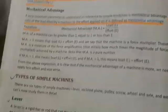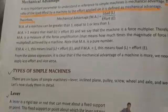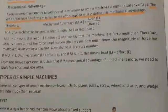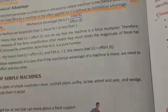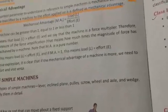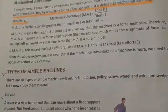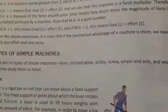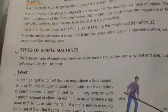There are six types of simple machines: lever, inclined plane, pulley, screw, wheel and axle, and wedge. Let us now study them in detail.